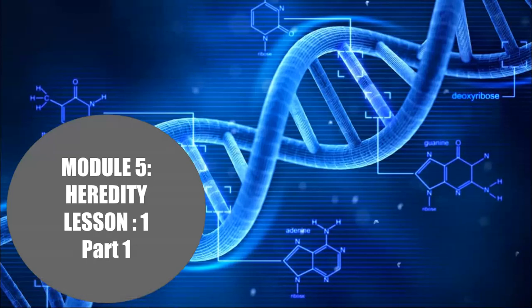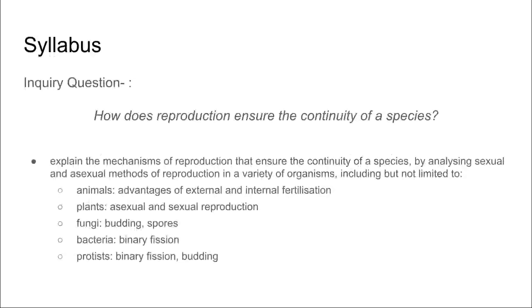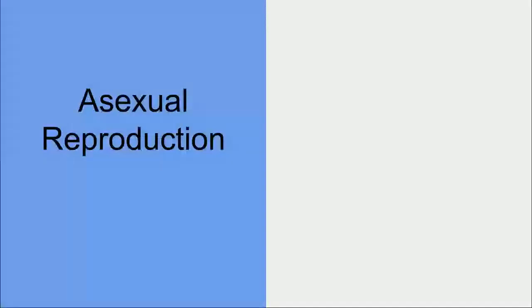Welcome to Module 5: Heredity. This is Lesson 1, Part 1, and in this video we're going to be focusing on mechanisms of reproduction. This is to answer the inquiry question: how does reproduction ensure the continuity of a species? Specifically in Part 1, we're going to be looking at asexual reproduction.